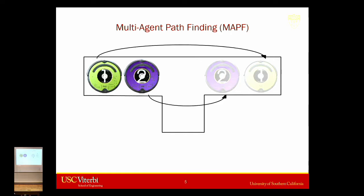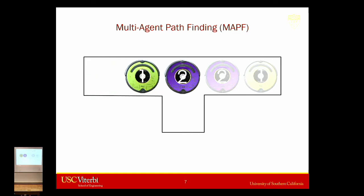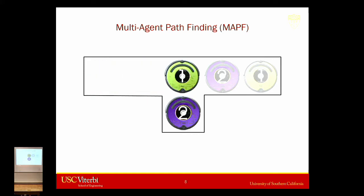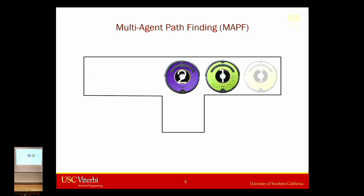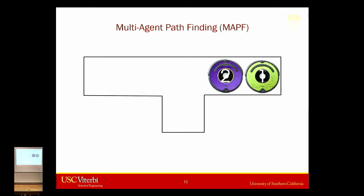In this case, the violet robot needs to move into this alcove here, let the green robot pass, and then they're both off to their goal locations.